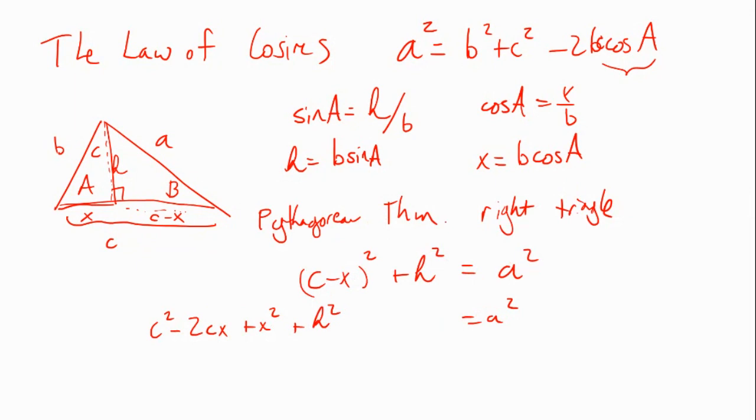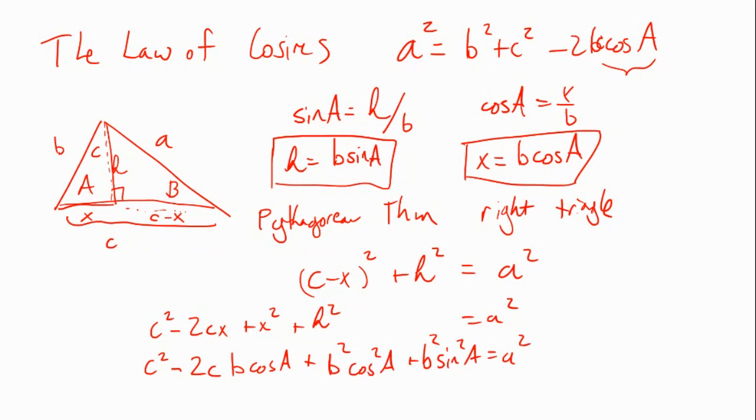Now what I'm going to do is wherever I have an H, I'm going to replace it with B sine A, and wherever I have an X, I'm going to replace it with B cos A. So C squared minus 2CX, that's actually B times the cosine of A, plus X squared, that's B squared times cos squared of A, plus H squared, that's B squared times sine squared of A. This equals A squared.